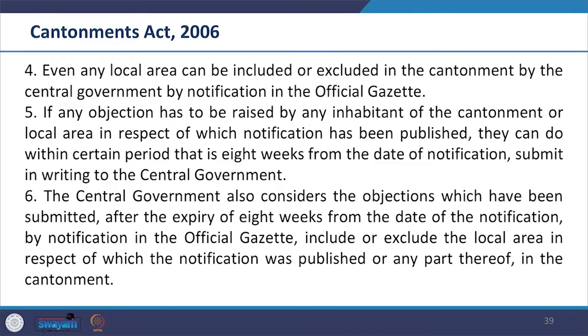The Central Government also has the right to alter the limits of cantonments. The Cantonment Act 2006 prescribes that any local area can be included or excluded from a cantonment by the Central Government by notification in the official gazette. If any objection has to be raised, any inhabitant of the cantonment or local area can do so within a prescribed period — currently eight weeks from the date of notification, which can be extended if acknowledged by the government. The boundary is determined by the Central Government, with provision to raise objections for people affected.